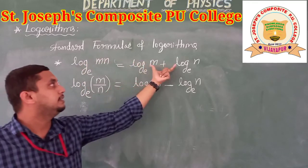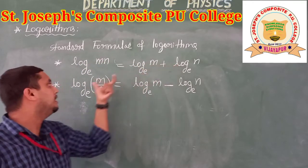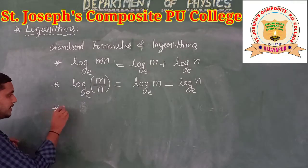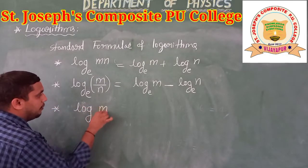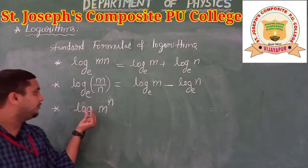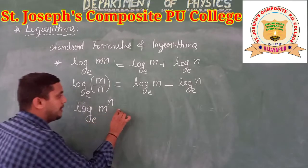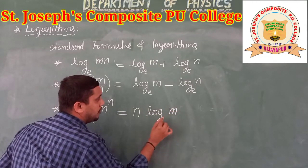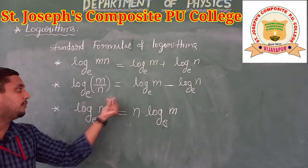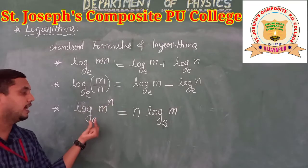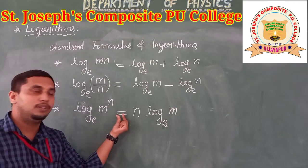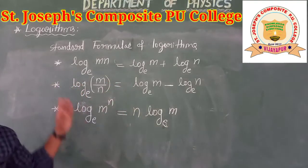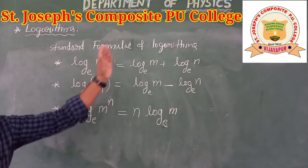Another rule is: log m to the power of n to the base e. If log m to the power of n to the base e is there, we will write it as n into log of m to the base e. So these are the three standard formulas of logarithms.